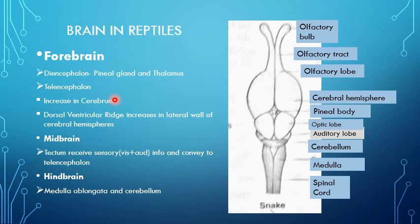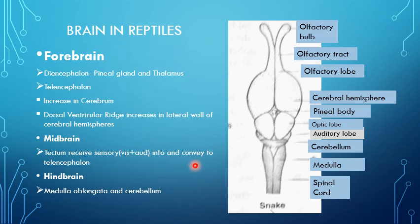In the forebrain of reptiles, there is enhancement in the size of the cerebrum such that the thalamus is no longer visible. The diencephalon comprises the pineal gland and thalamus, while the telencephalon has the cerebral hemispheres. There is a dorsal ventricular ridge causing an increase in the lateral wall of the cerebral hemispheres. In the midbrain, the tectum receives sensory information for visual and auditory stimuli and conveys it to the telencephalon. In the hindbrain, the medulla oblongata and cerebellum are present.